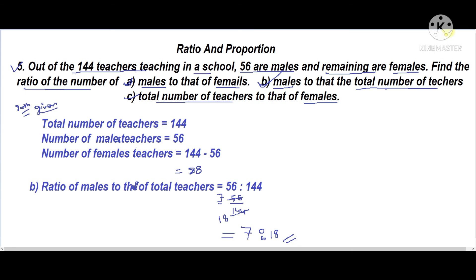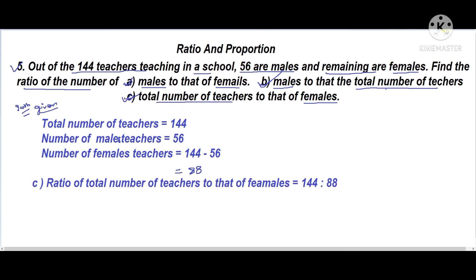Part c: ratio of total number of teachers to females. We write 144 in numerator and 88 in denominator. Cutting both by 8 gives 18 in numerator and 11 in denominator. So the ratio of total teachers to females is 18 is to 11.